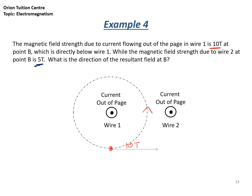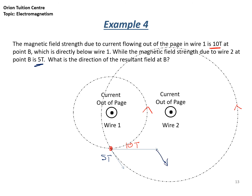Doing the same for wire 2: drawing a circular ring to where point B is, followed by a tangential line. Since the current is in the same direction, the magnetic field is also anti-clockwise, explaining the direction of the tangential line. This vector is about 5 Tesla, so slightly shorter. To find the vector sum, we extend and join the vectors tip to tail — the resultant of 10 Tesla and 5 Tesla points in the combined direction, illustrating the vector sum of the magnetic field.